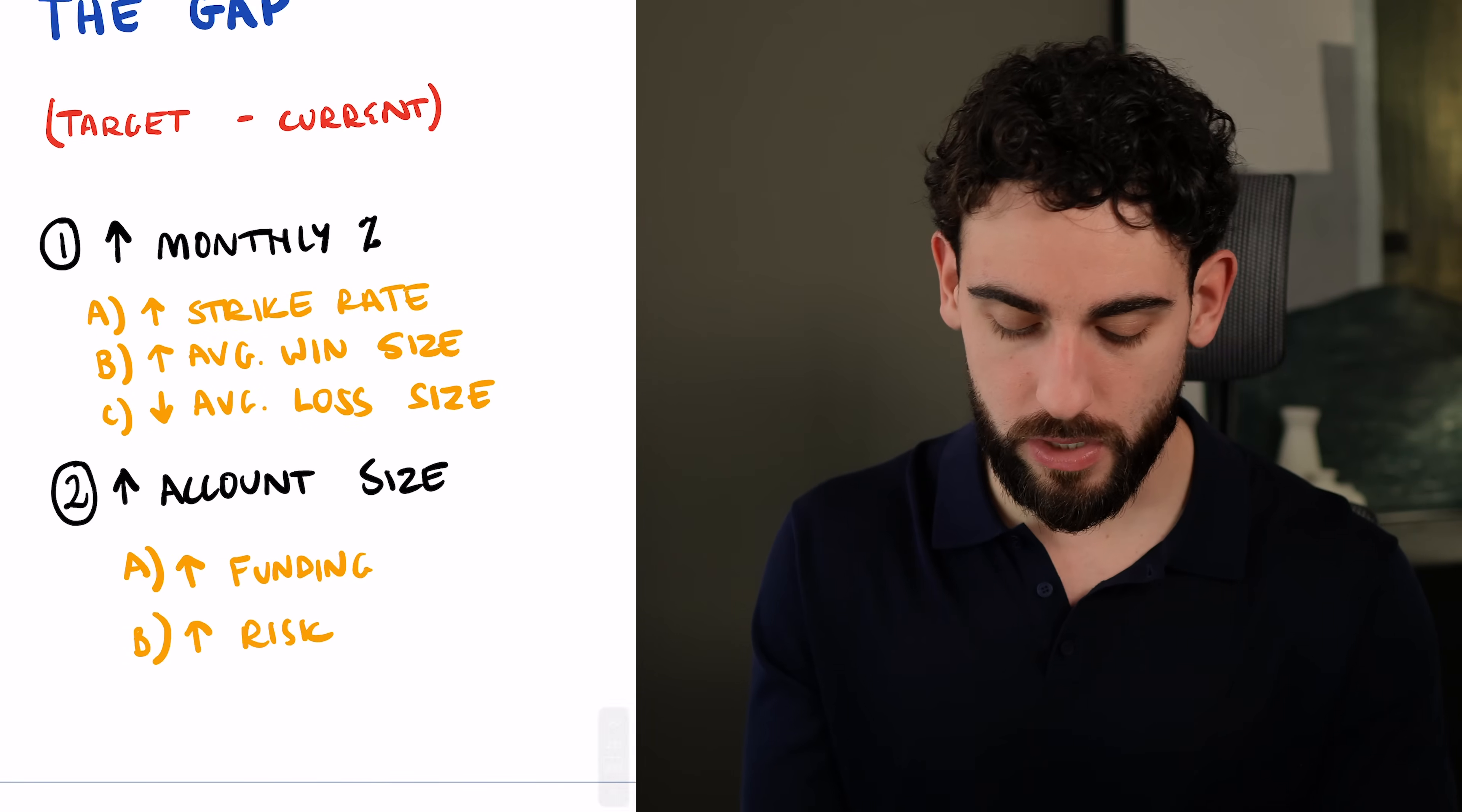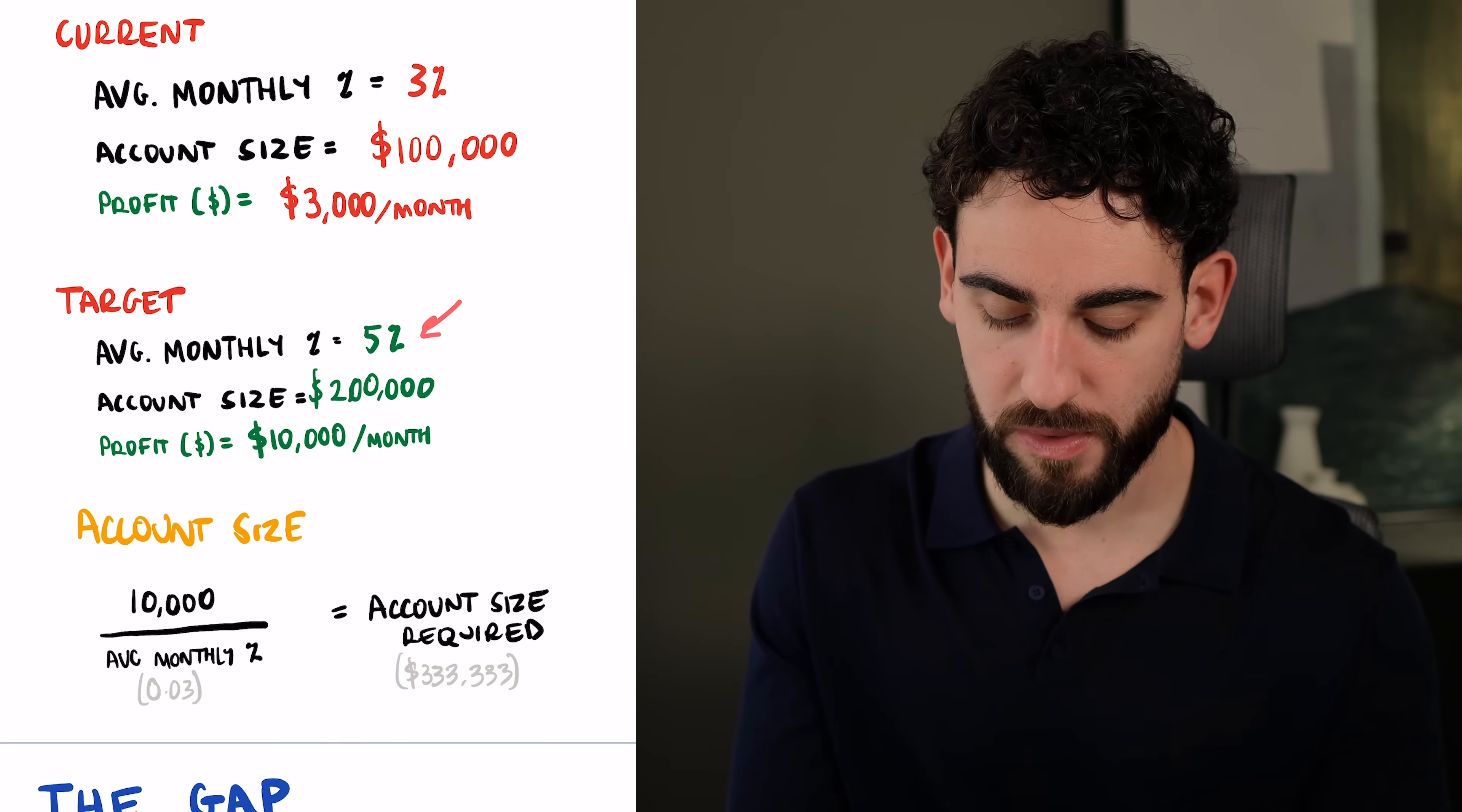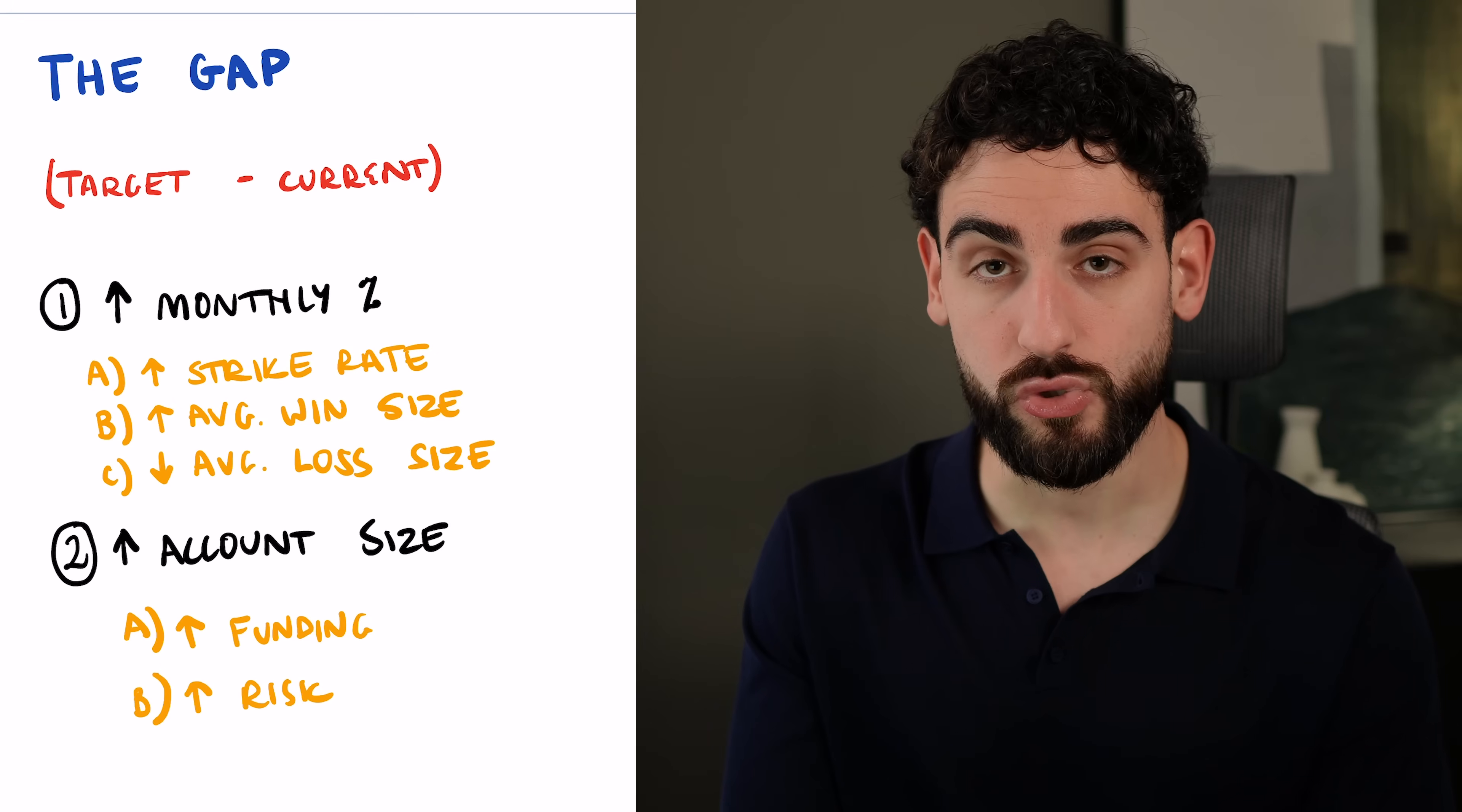So how do we actually go about doing that? Well, then what you want to focus on is, how can I increase my monthly percentage? If you want to start to make more money from your trading, now that you know your math, now you can start to optimize. The first thing you want to optimize is increasing your average monthly percentage. That's number one. Number two is increasing your account size.